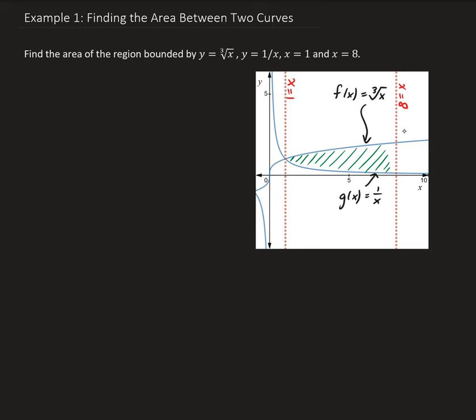To do this, we're going to take the integral of the difference of the top function minus the bottom function. So the area equals the integral from a to b of f(x) minus g(x), where f is on top and g is on the bottom.